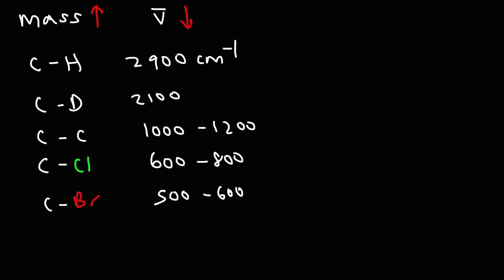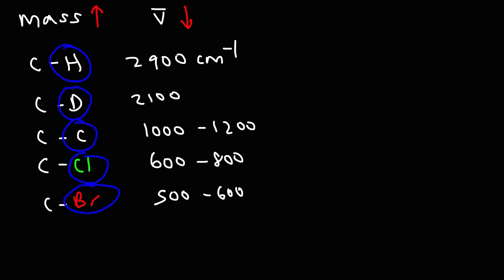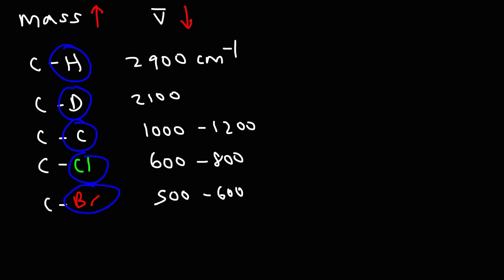Let's talk about the relationship between atomic mass and wavenumber. As the atomic mass goes up, the wavenumber goes down. Going from hydrogen all the way to bromine, the atomic mass goes up, but the wavenumber decreases from 2,900 centimeters to the minus 1 to an average of 550. There's an inverse relationship between atomic mass and the wavenumber at which a bond absorbs IR radiation.